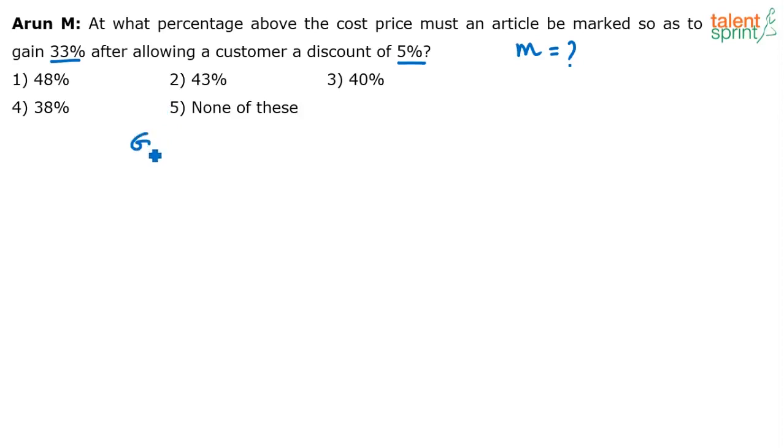You know that gain or profit is effective of discount and marked price. So effective percentage is what? a + b + ab/100. Now gain here is 33, so this 33 should be equal to a + b + ab/100, where a is the discount percentage.